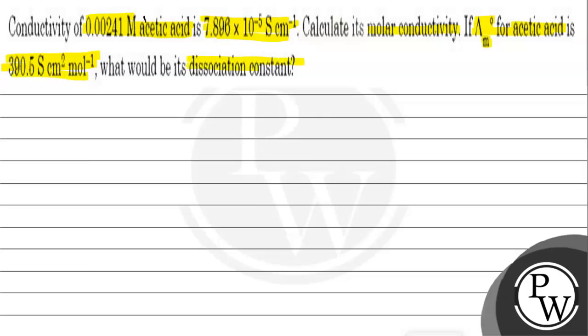If limiting molar conductivity for acetic acid is 390.5 cm cm square mole inverse, what would be its dissociation constant? In this question we have asked two things: first is molar conductivity and the other is dissociation constant.